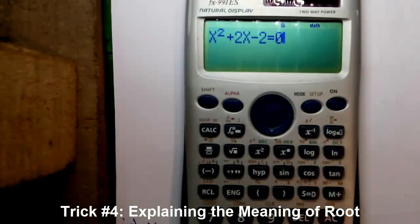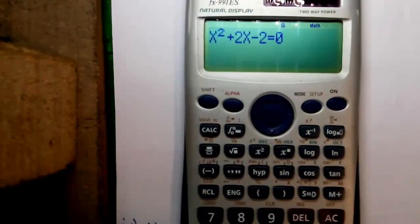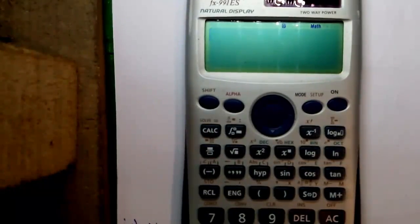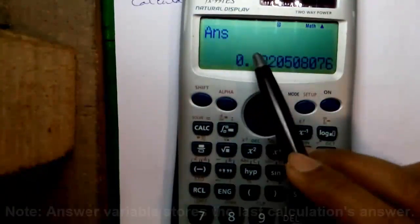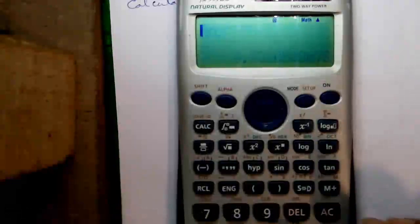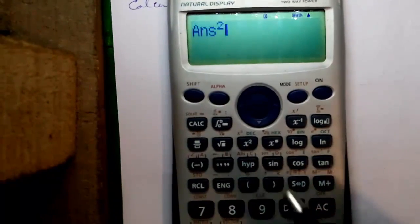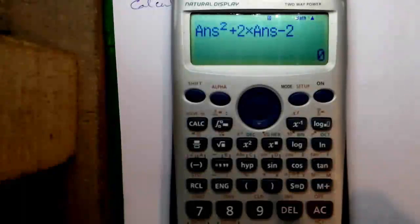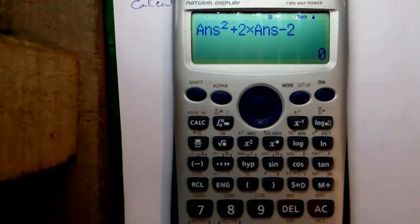In part 4, I will explain the meaning of root. A root is that value of X which satisfies the equation. Our root is 0.73205, which is stored in the answer variable. Press answer and equals to confirm: the answer is 0.73205080760. Now we verify: enter answer² + 2×answer - 2 and press equals. The result is 0, which proves that X² + 2X - 2 = 0. That is the meaning of root.